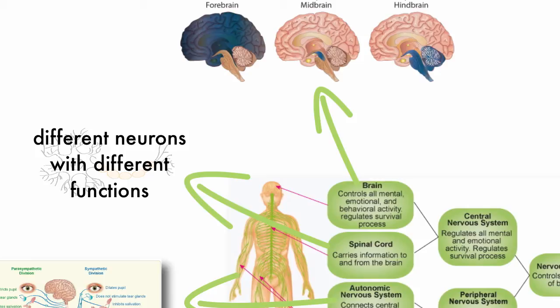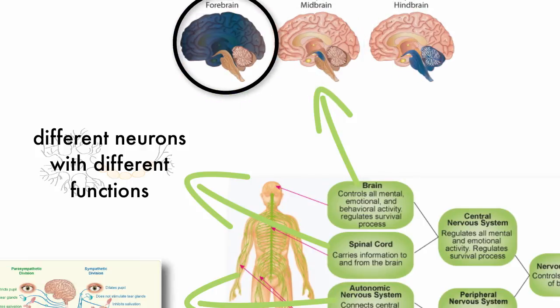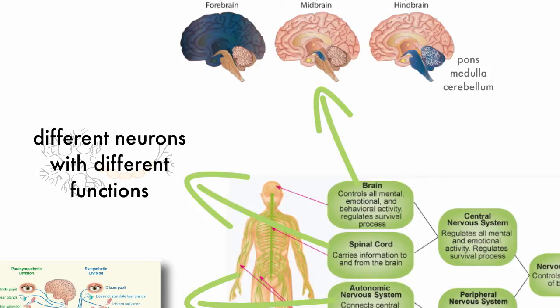For now let's divide the brain into three sections based on their location: the hindbrain, midbrain, and forebrain. The hindbrain is responsible for basic life functions and can be divided into the pons, medulla, and cerebellum. We could make more divisions within the midbrain but for now let's wait. The forebrain can divide into the thalamus, the hypothalamus, the limbic system, and the corpus callosum.